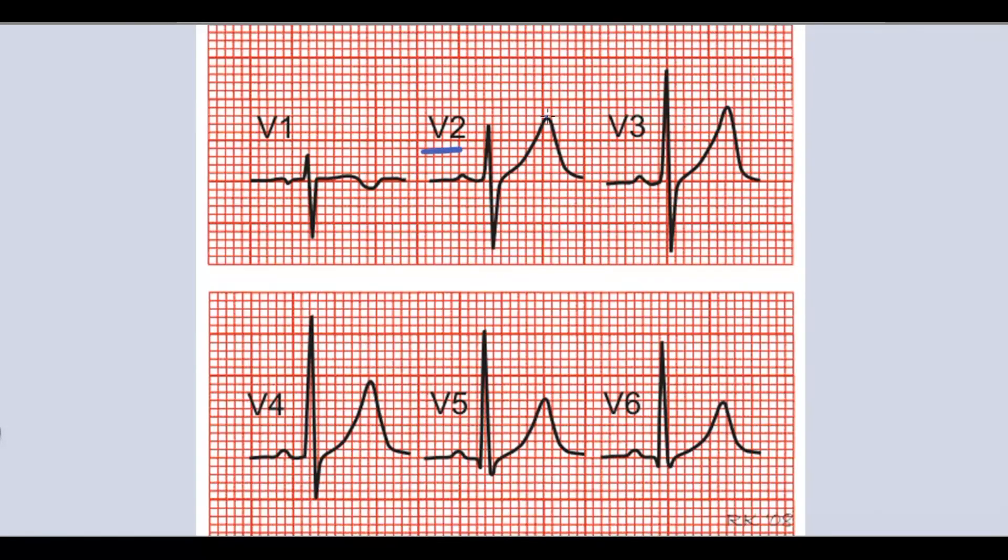In chest leads T wave always positive from V2 to V6. T wave can be positive, biphasic, and even negative in V1.